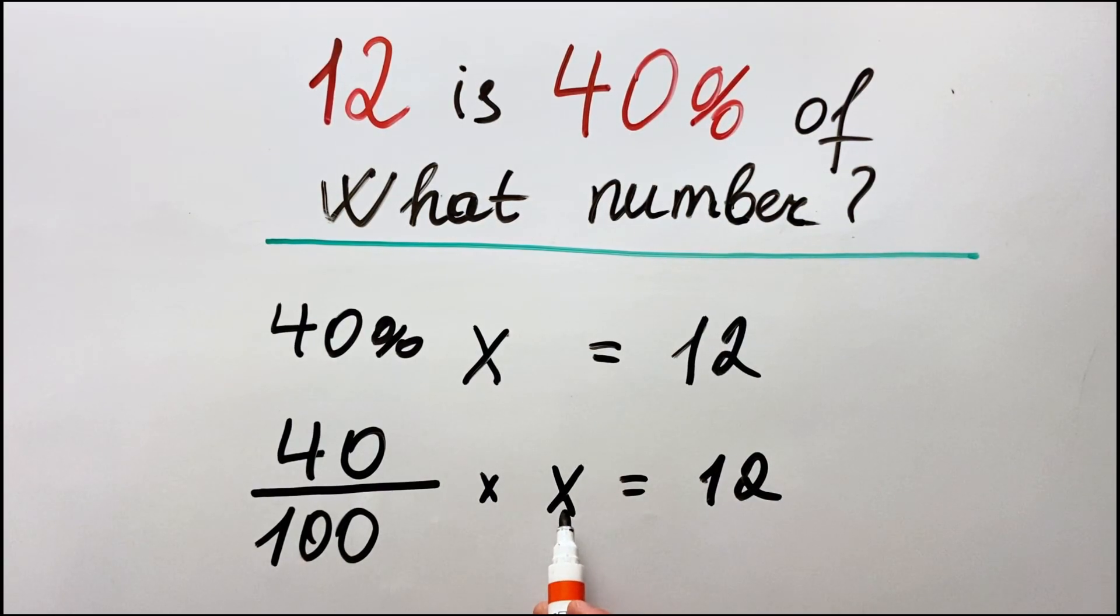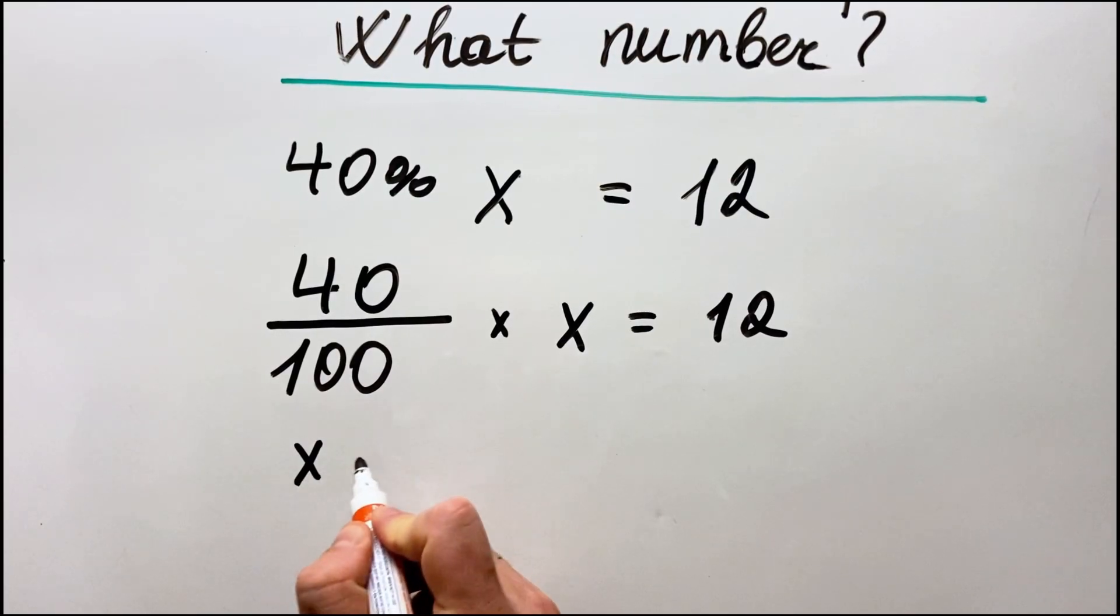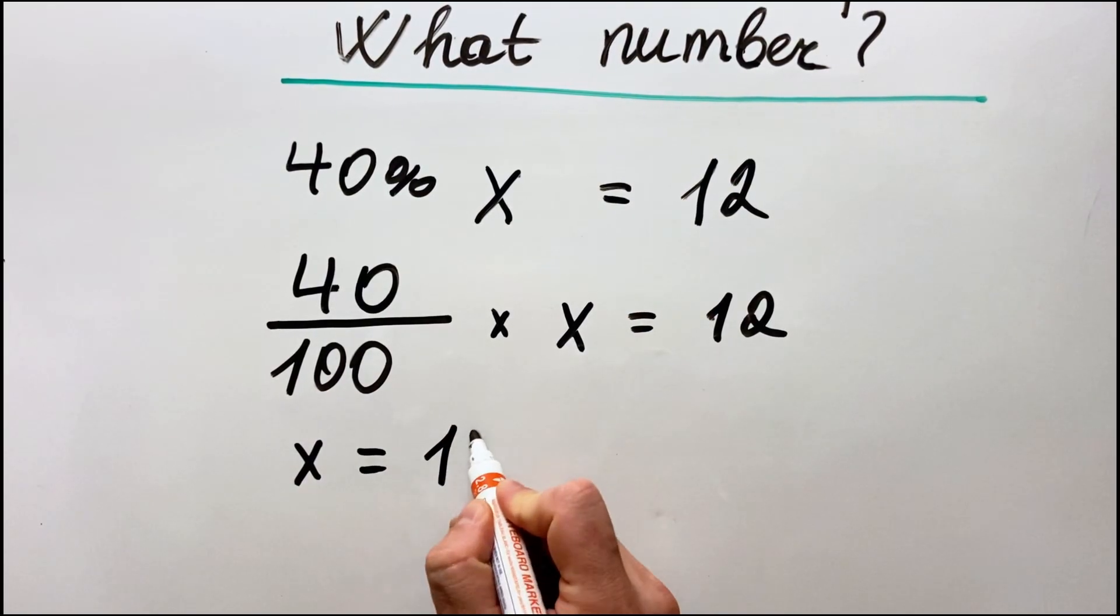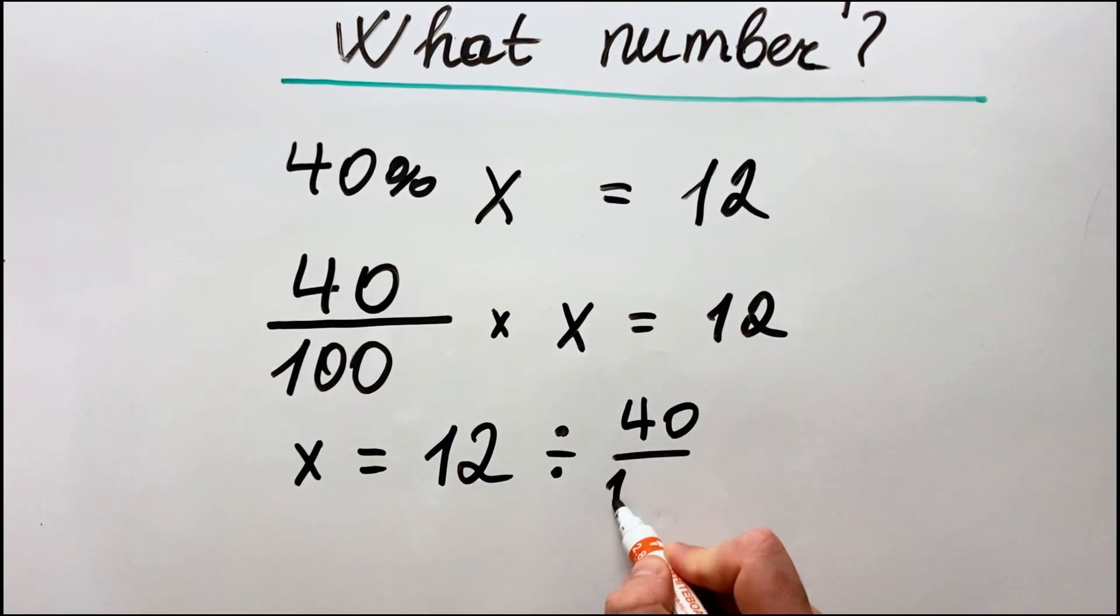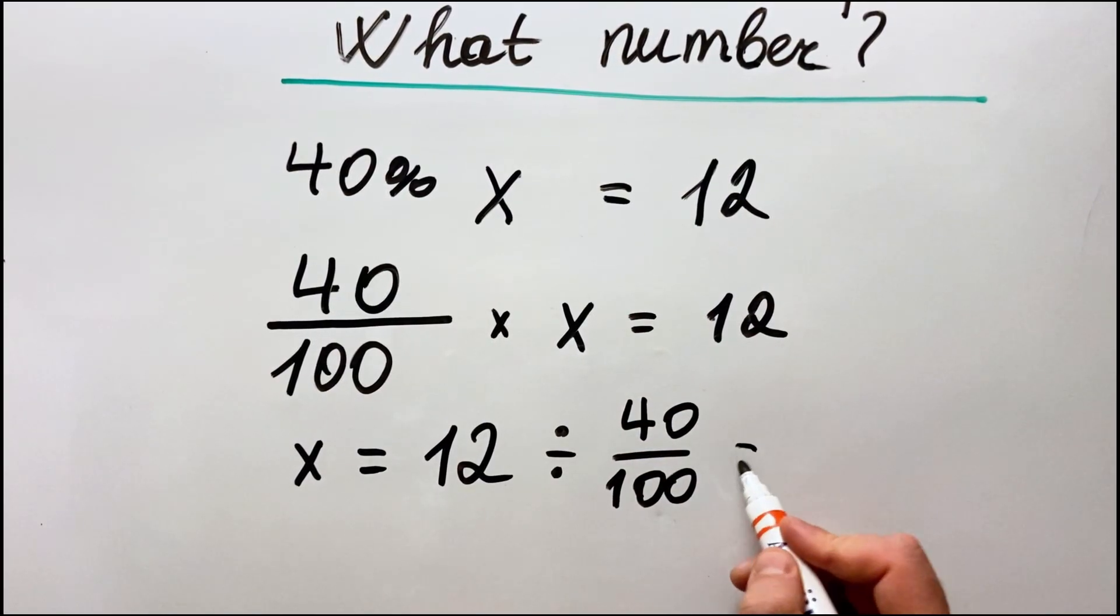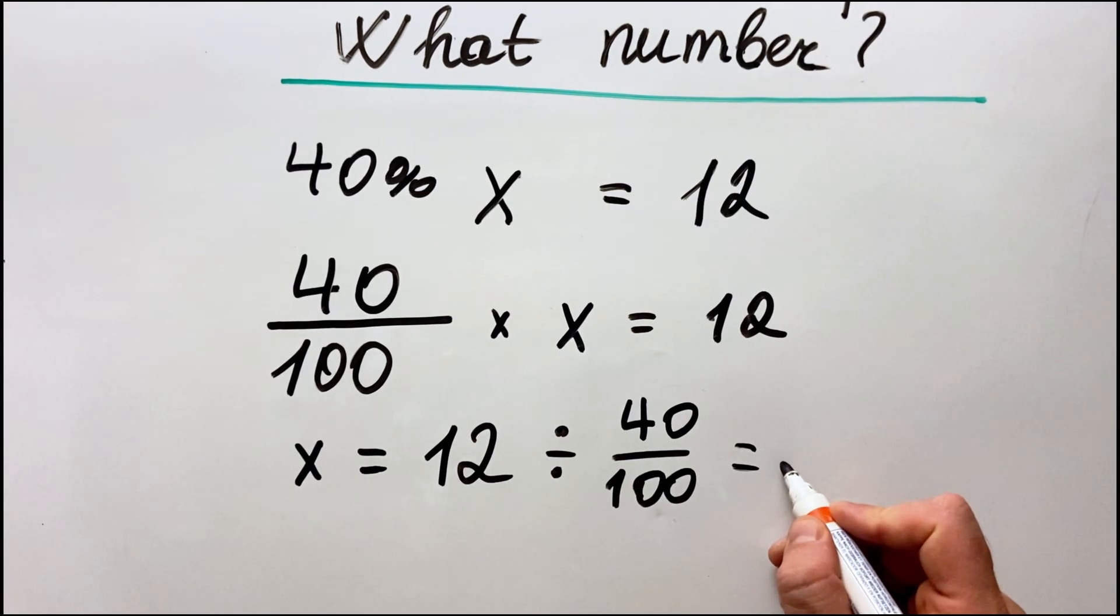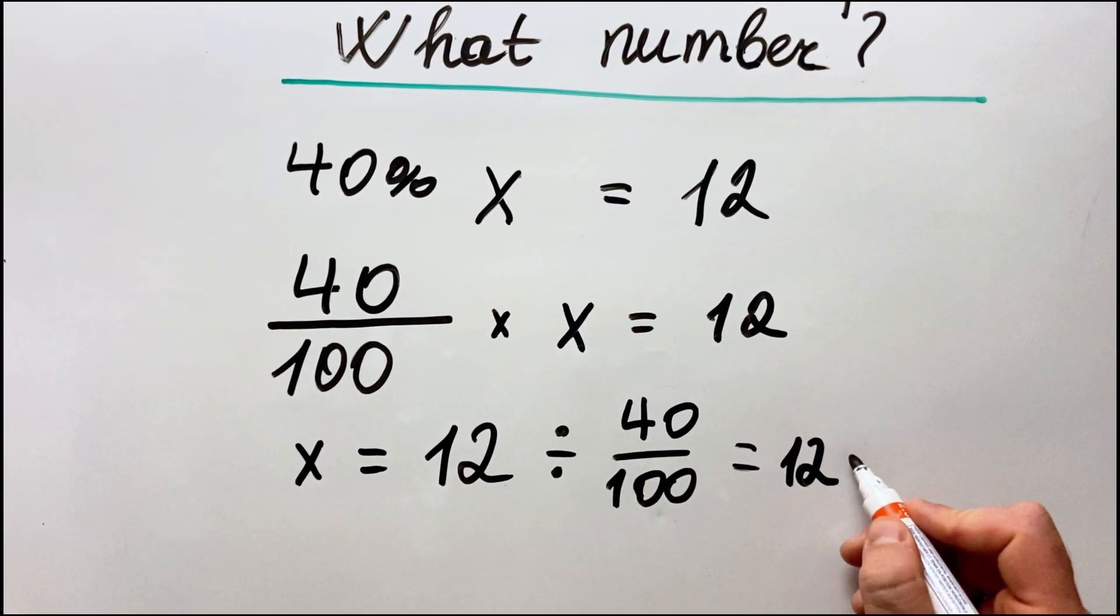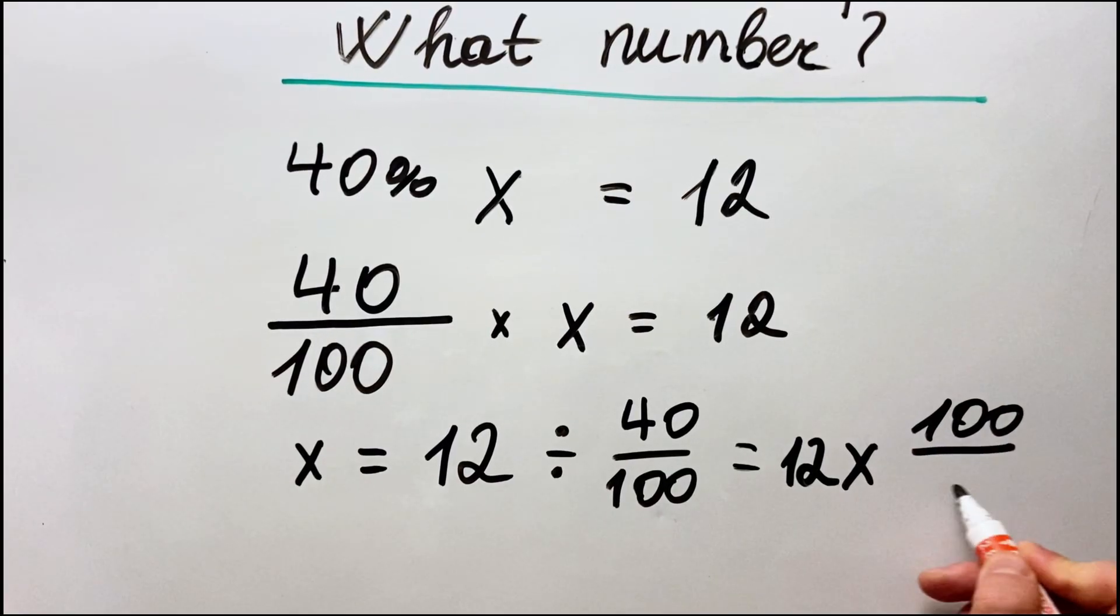So to find x we just need to take 12 and divide it by 40 over 100. So we have x equals to 12 divided by 40 over 100, which equals - when we divide by a fraction we flip the number - so we have 12 multiply by 100 over 40.